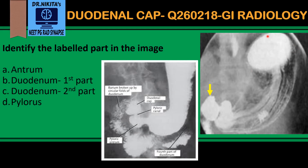This is a barium meal image which shows the stomach. In the stomach, this is the fundus, the body, this is the antrum. The short segment here is the pylorus — that is where the stomach ends.